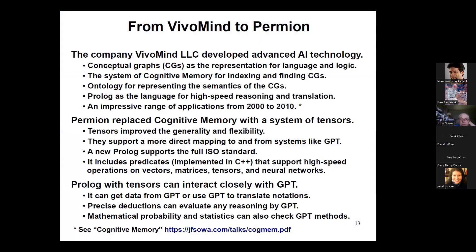Here's a bit of history. The VivoMind company that Aaron and I and several others developed around the year 2000 used conceptual graphs as the knowledge representation language, with a system called cognitive memory for indexing and finding CGs. It used an ontology for representing the semantics of conceptual graphs and Prolog for high-speed reasoning and translation. We had an impressive range of applications over the 10 years from 2000 to 2010.